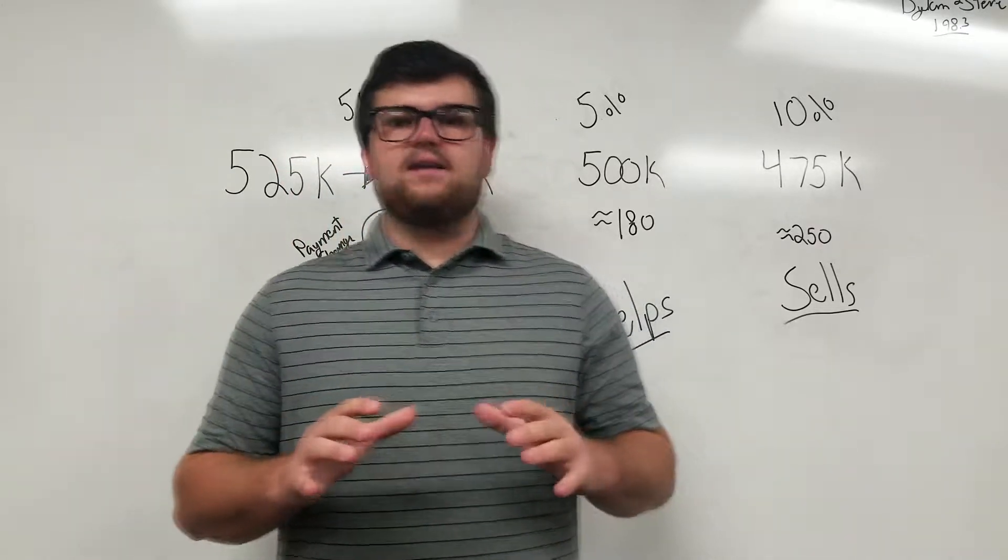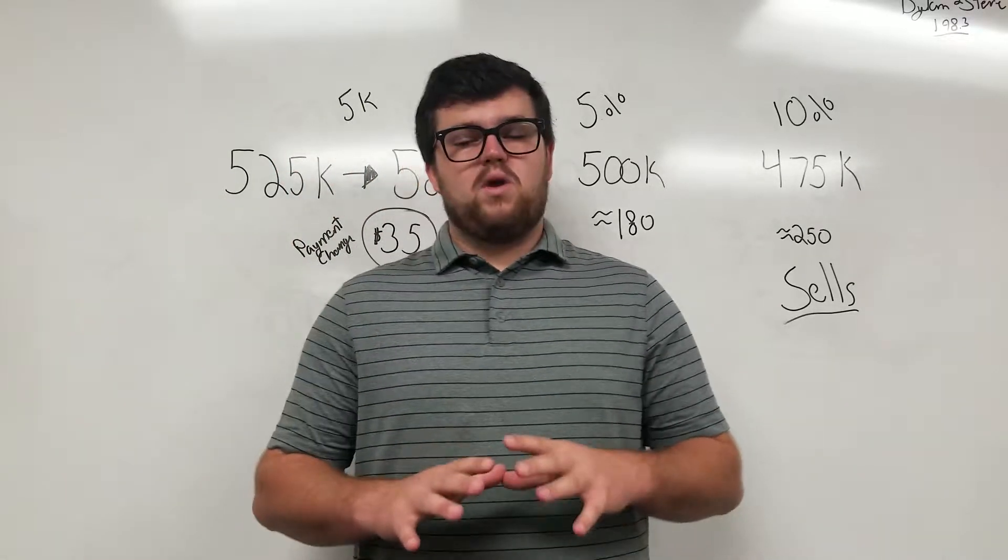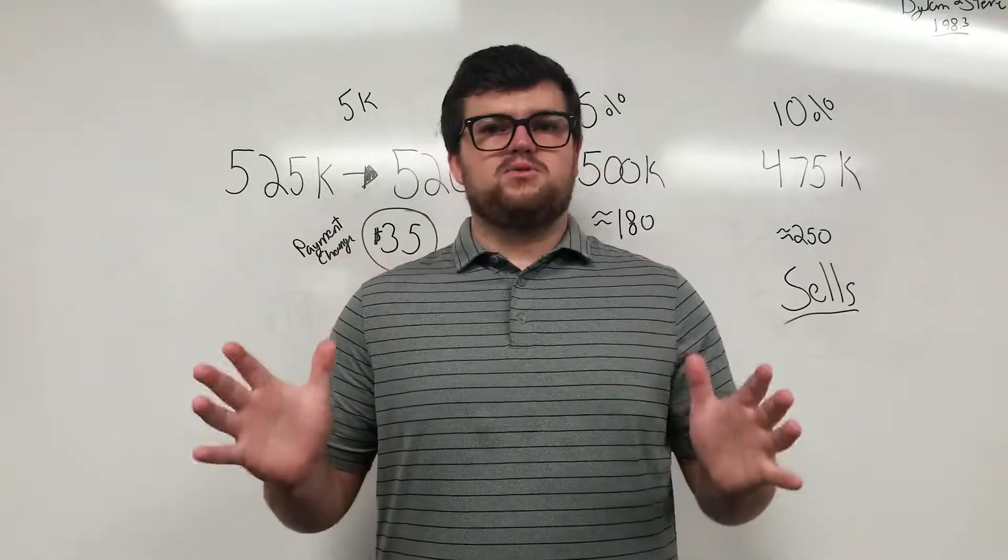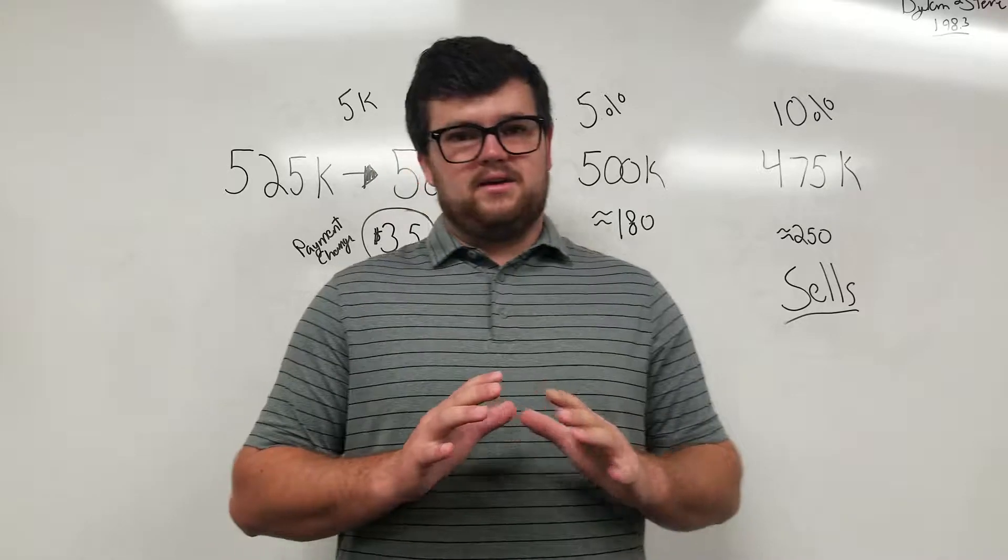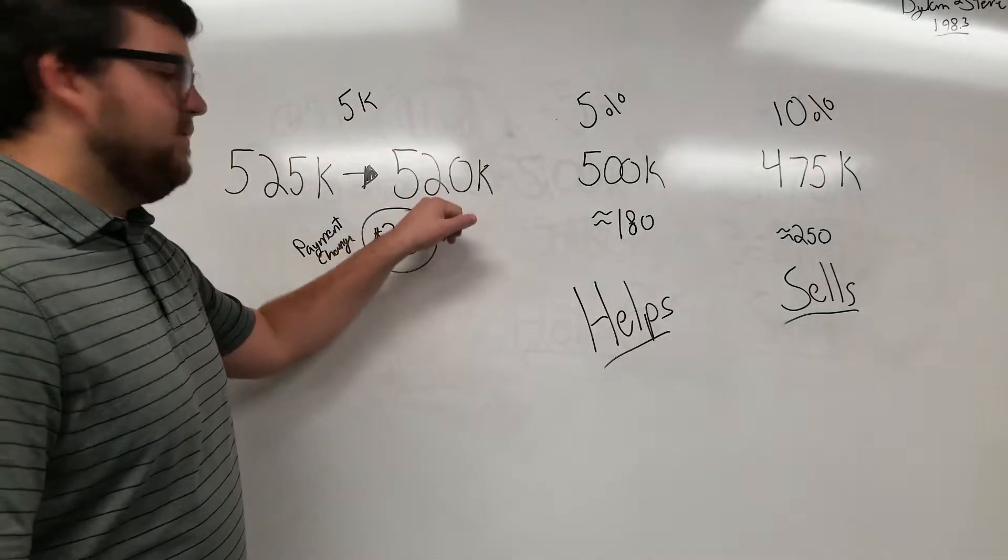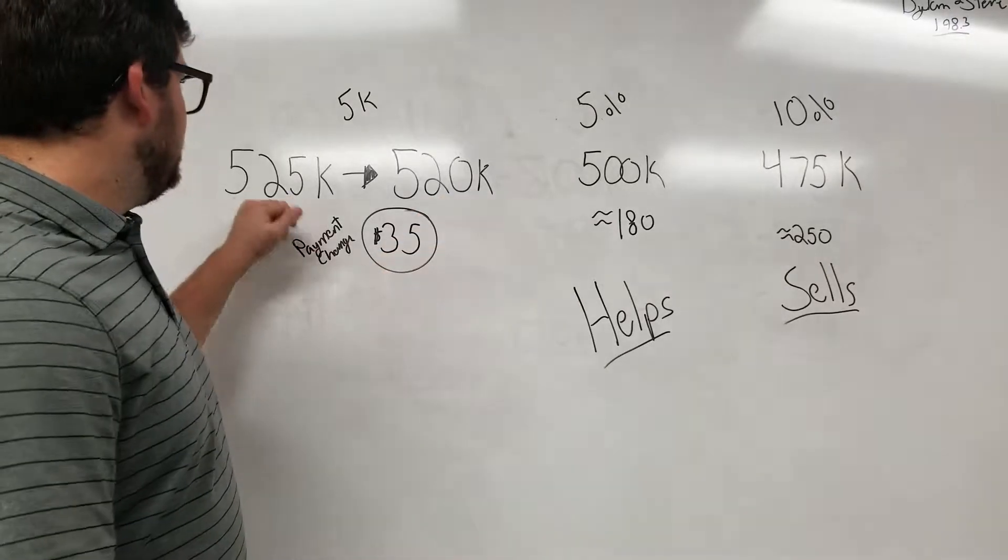Now if you're listed at $525,000 and you're thinking, 'I'm gonna drop it by $5,000, that's gonna open my field up to a whole new group of buyers,' you're wrong. If somebody's pre-qualified at $520,000, they're gonna be looking at houses that are $525,000.